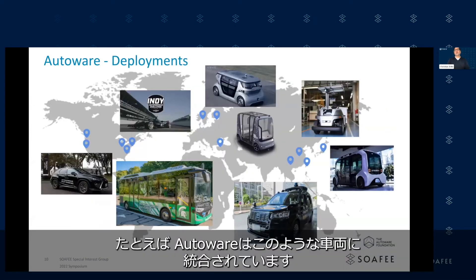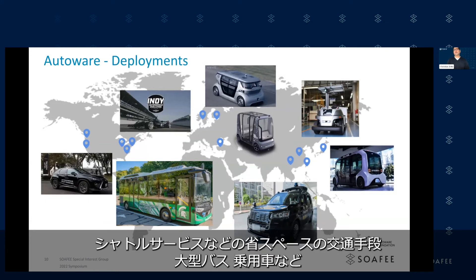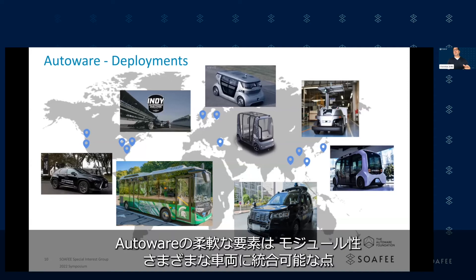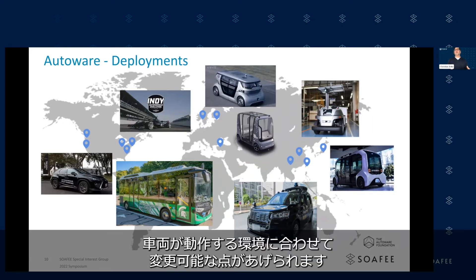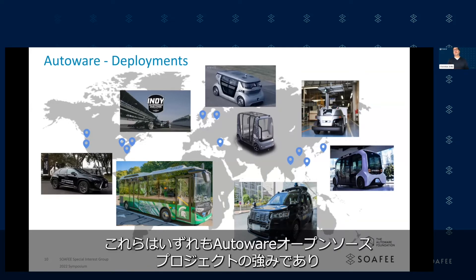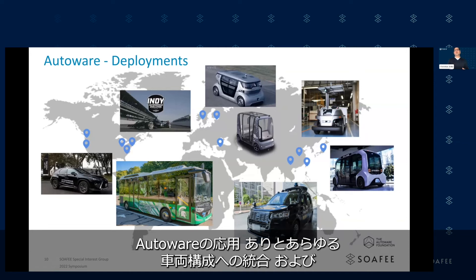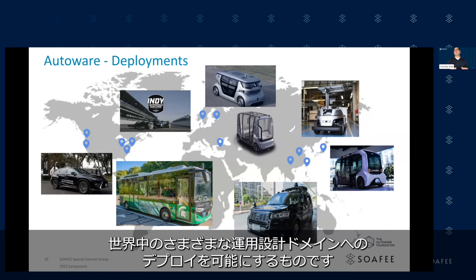Just to give you an example of the types of vehicles that Autoware has been integrated into: there are actually hundreds of projects around the world already using Autoware, in various vehicle configurations — whether it's small form-factor mobility-as-a-service shuttles, full-size buses, or passenger vehicles. The flexibility of Autoware is its modularity: the ability to adapt it and integrate it into different vehicles, and the ability to modify the functionality within different modules — whether perception, planning, or control — for the particular environment the vehicle is operating in. These are the strengths of the Autoware open-source project that have allowed it to be adapted and integrated into so many different vehicle configurations and deployed in different operational design domains around the world.